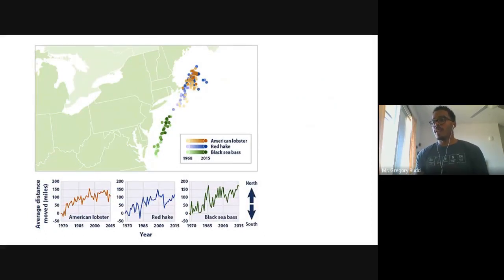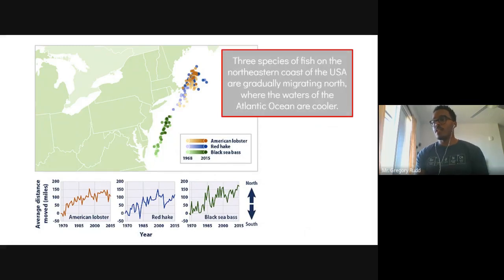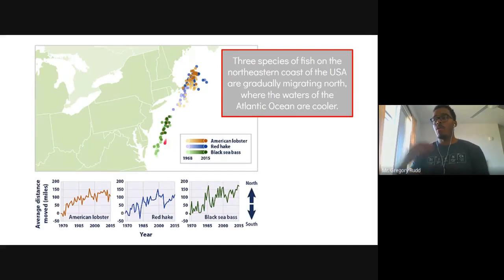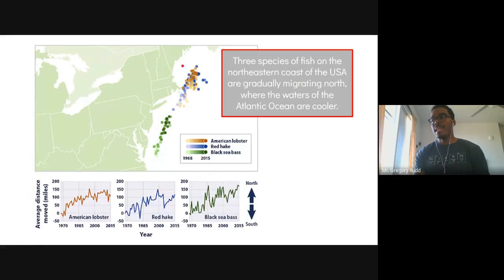Three fish species on the northeastern coast of the United States — near New Jersey, New York, Rhode Island, Connecticut, Massachusetts — are key to the fishing industry there. But as global temperatures get hotter, the waters of the Atlantic Ocean get hotter too, so these fish swim north to find cooler water. Fish we used to find on the coast of Virginia are now found all the way up in New Jersey. Fish once found off New York and Long Island are now found in Maine. Year by year these fish are migrating north.